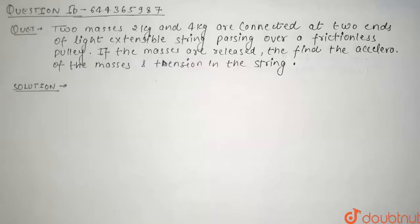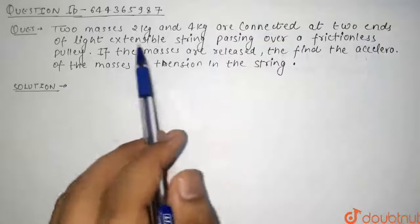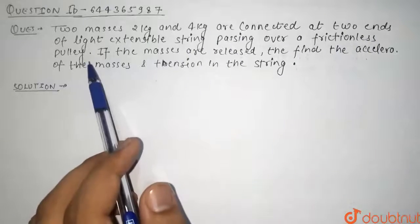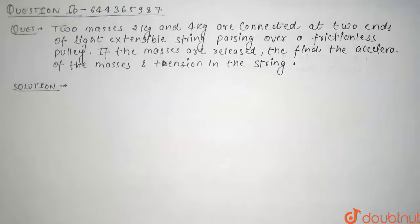Hello guys, so for today's question: two masses 2 kg and 4 kg are connected at two ends of a light extensible string passing over a frictionless pulley. If the masses are released then find the acceleration of the masses and tension in the string.